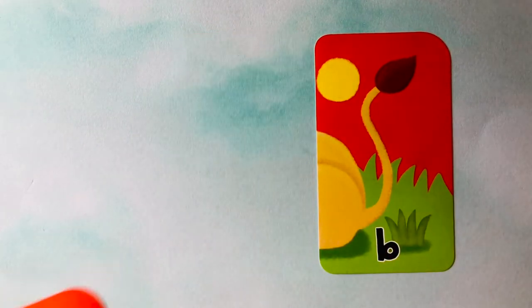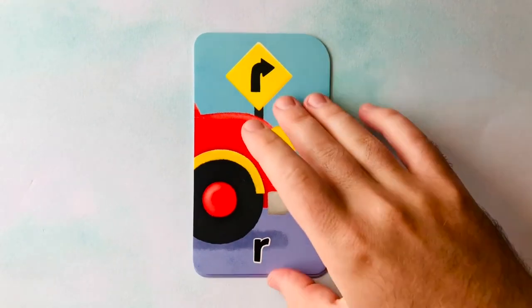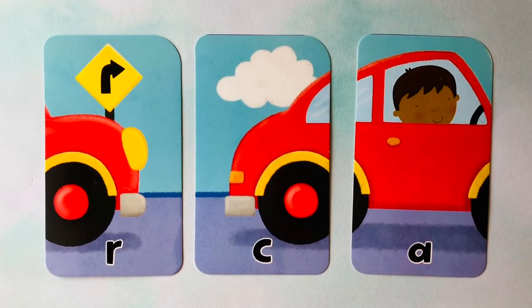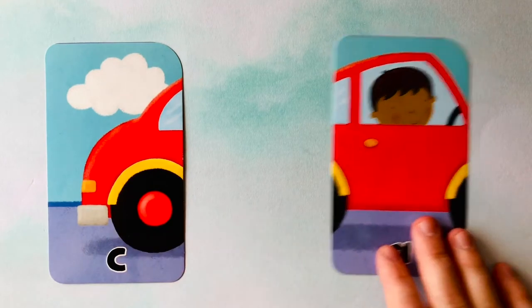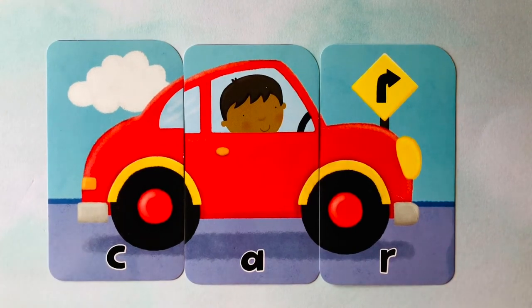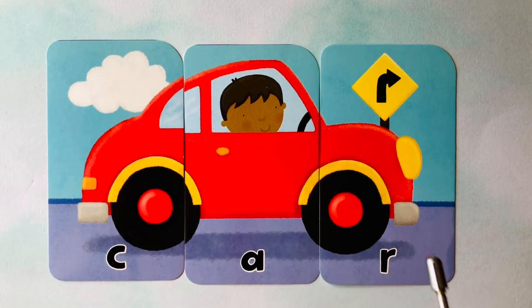Goodbye, C. See you later, U. After a while, B. Let's do one last word. Looks like we're starting with an R. And we have an A. And looks like a C. I think it's a car. Car starts with a C. Next is an A. And it finishes with an R. Car is spelled C-A-R.